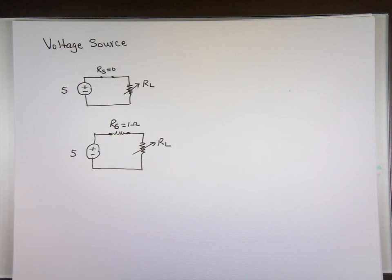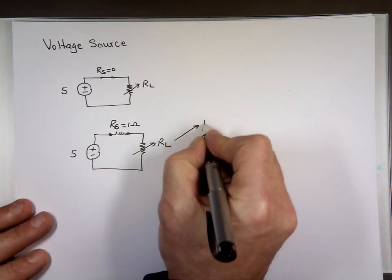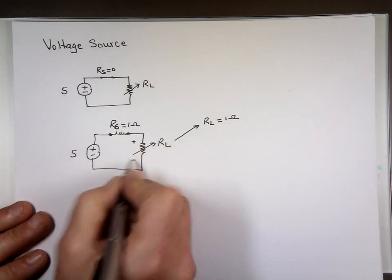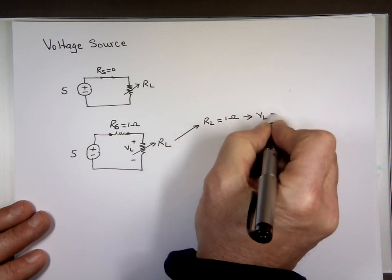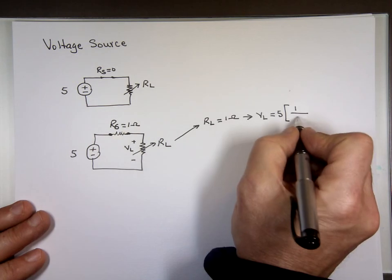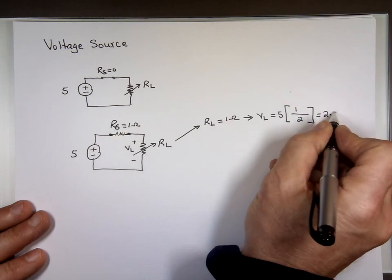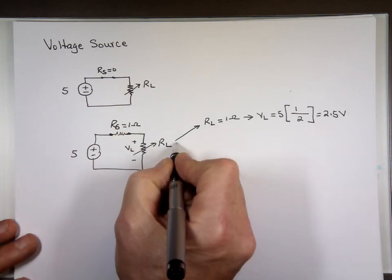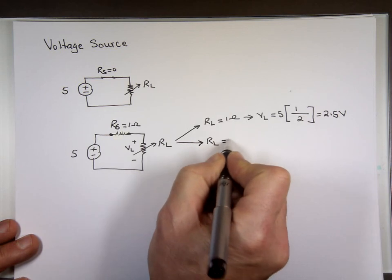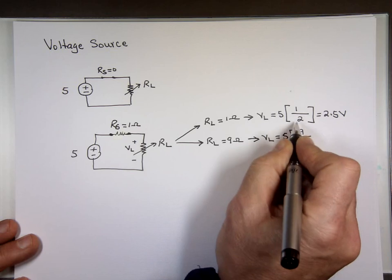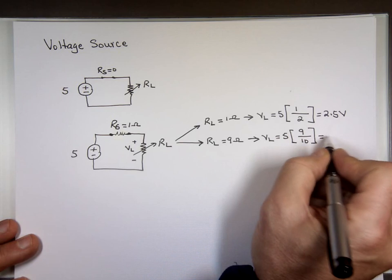Let's look at what happens. If R sub L equals 1 ohm, the load voltage by voltage division is 5 times 1 over 2, which gives 2.5 volts — you're only getting half. If you increase R sub L to 9 ohms, then V sub L equals 5 times 9 over 10, which is 4.5 volts.